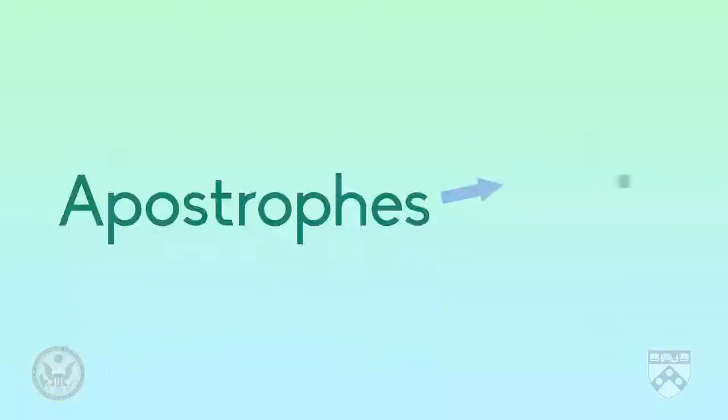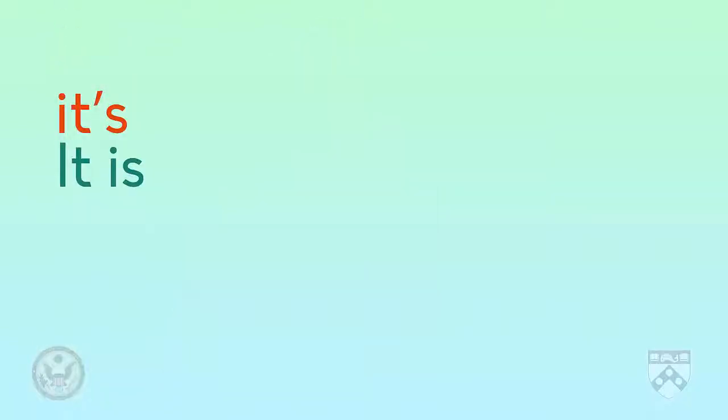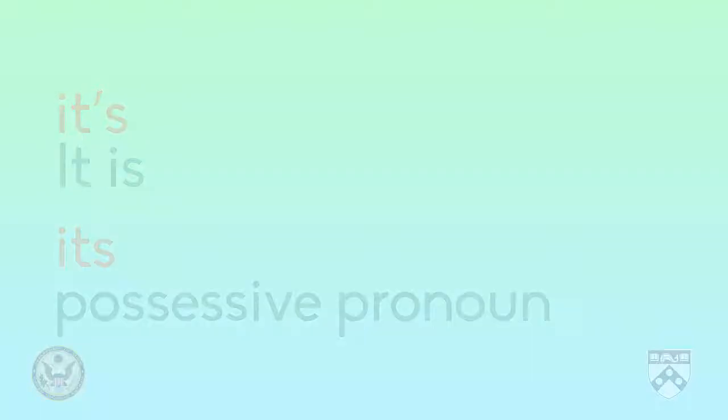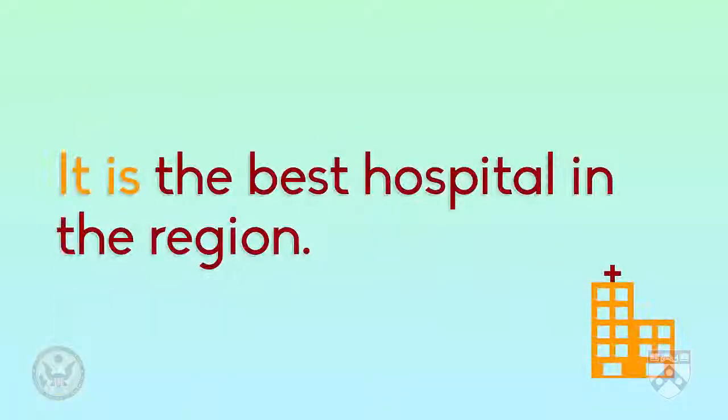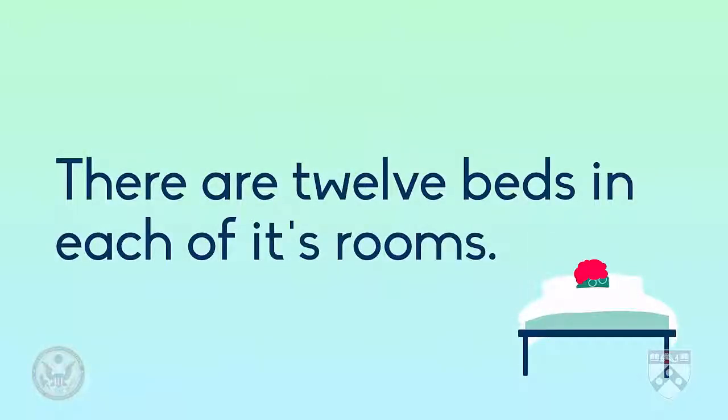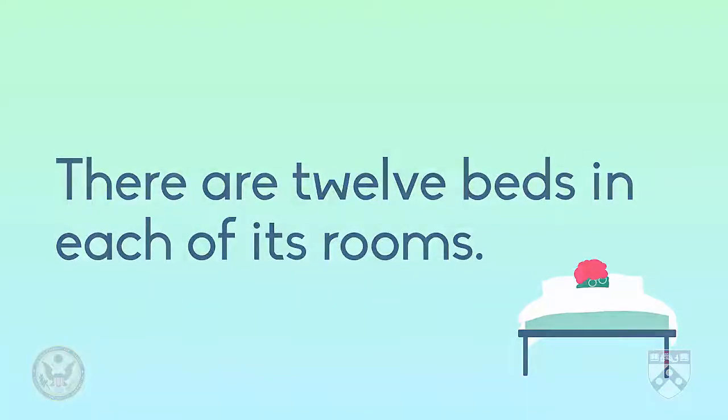Putting apostrophes in the wrong place is a common error that journalists make. An example of this is the difference between it's, a contraction of it is, and its, a possessive pronoun. Let's look at an example of these. It is the best hospital in the region could be contracted to it's the best hospital in the region. There are 12 beds in each of its rooms. Here, the its is a possessive pronoun meaning the hospital, so there is no apostrophe.